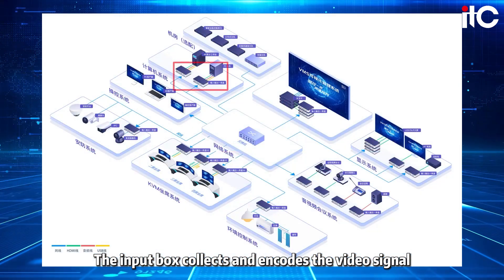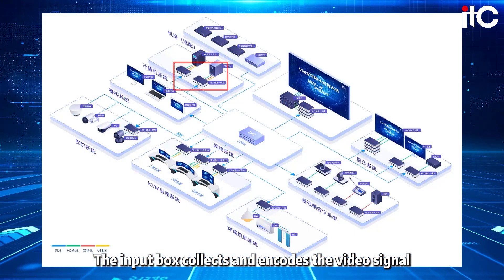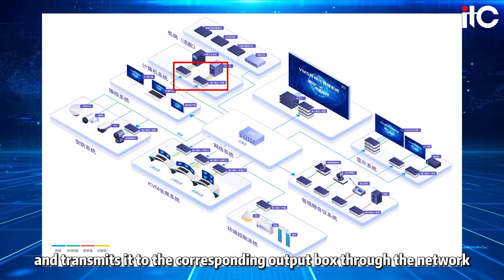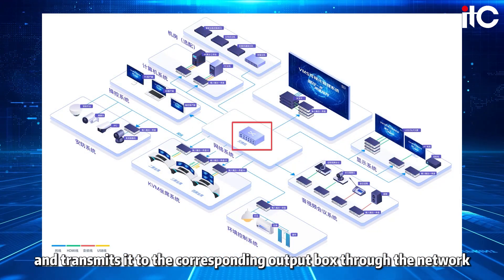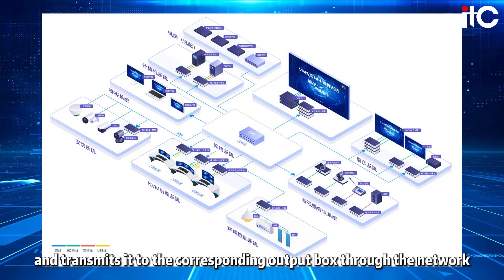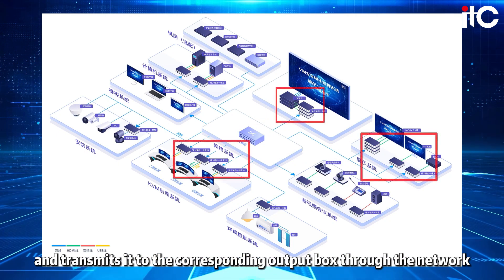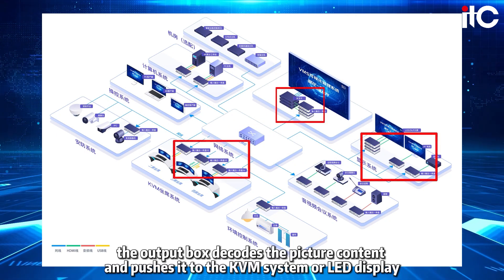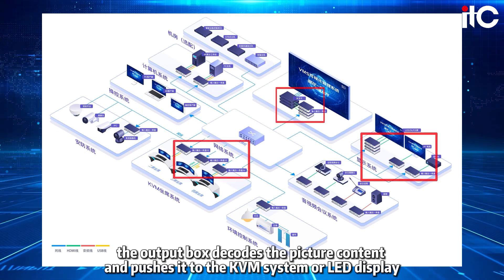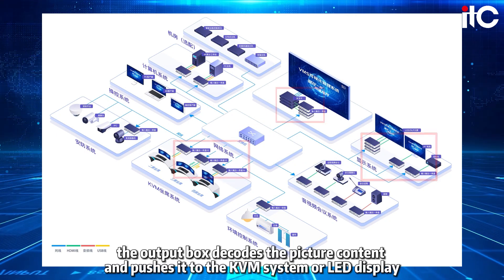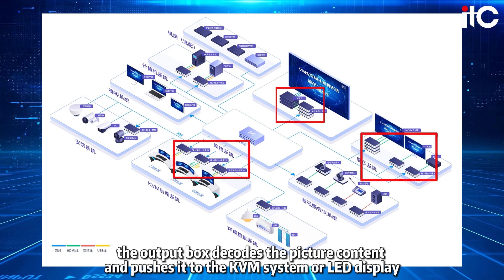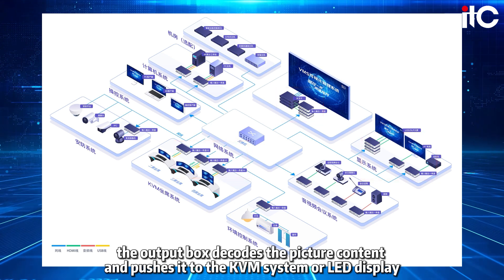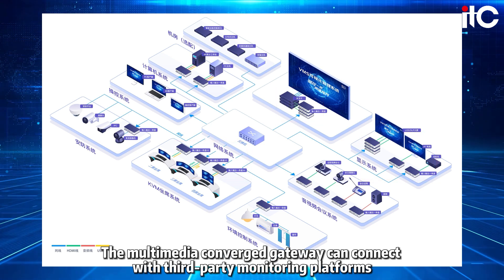The input box collects and encodes the video signal, and transmits it to the corresponding output box through the network. The output box then decodes the picture content and pushes it to the KVM system or LED display.